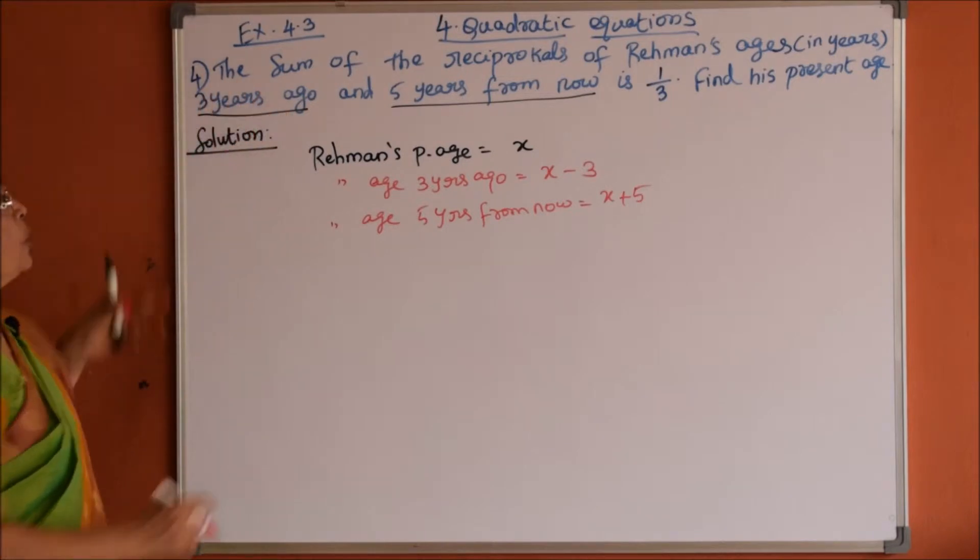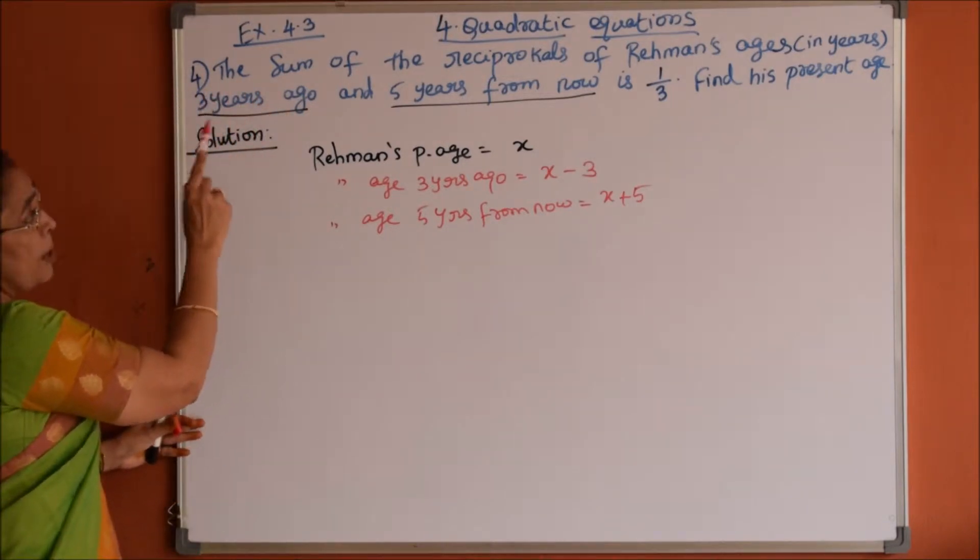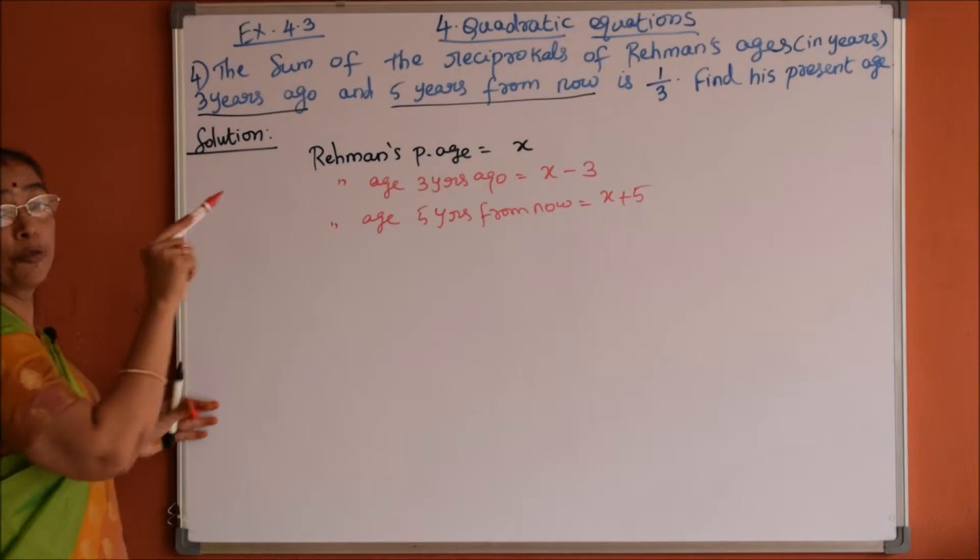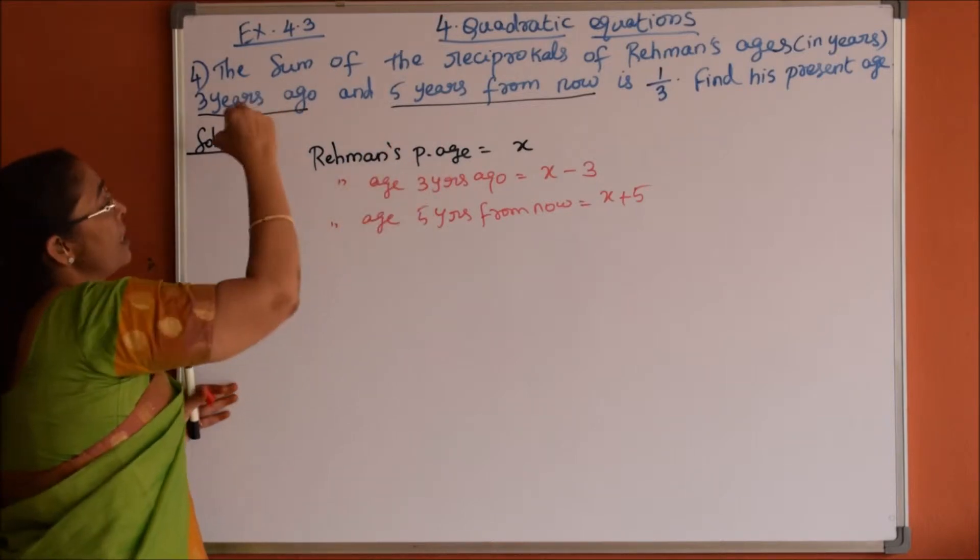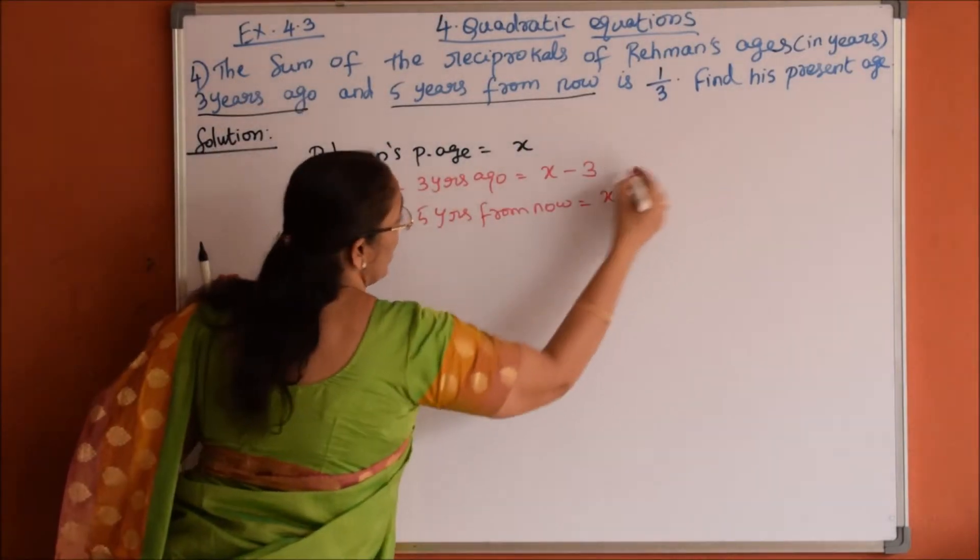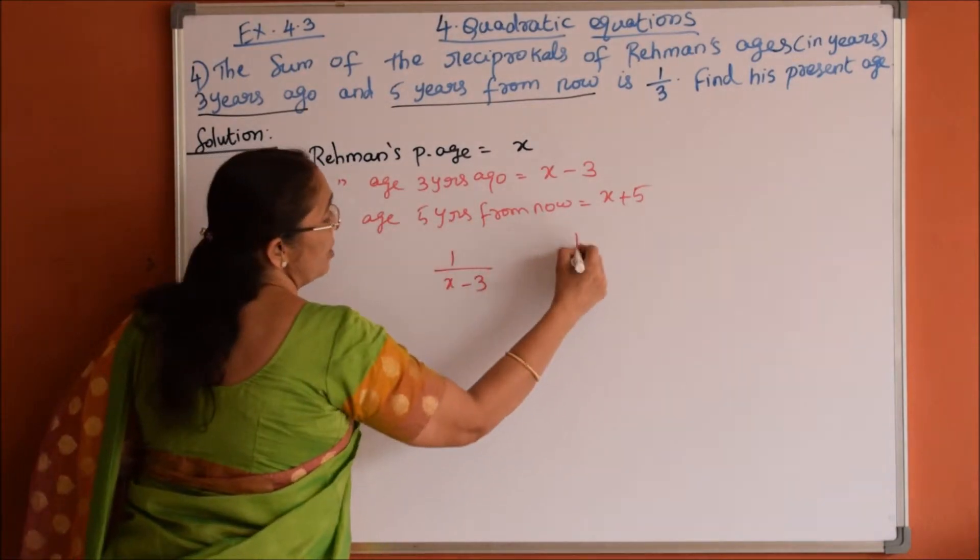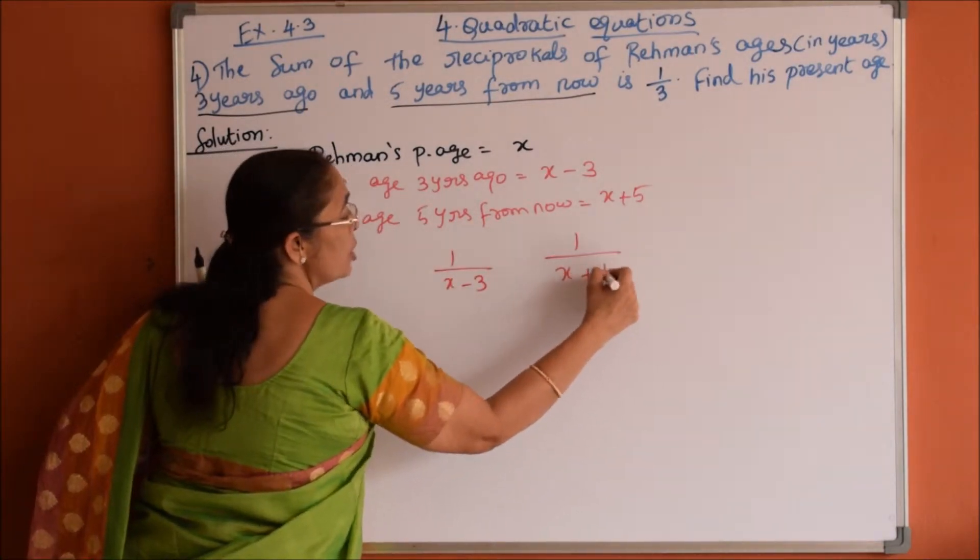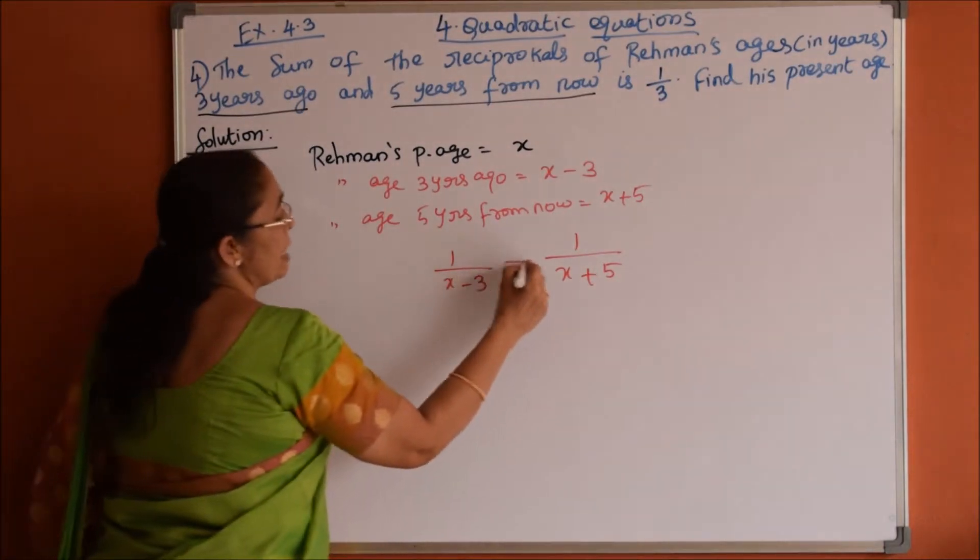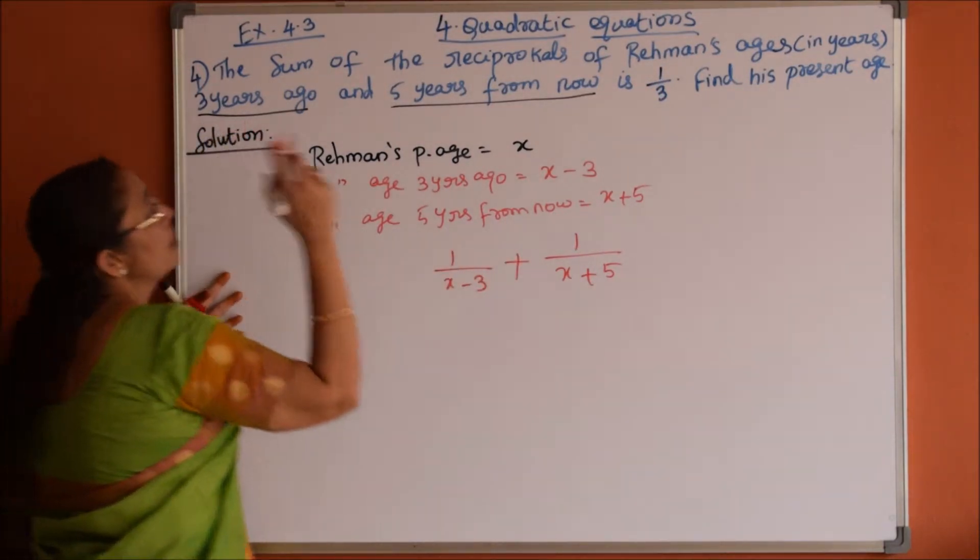Now shall we go to the first sentence. The sum of the reciprocals of Rahman's ages, 3 years ago, so reciprocal of this one is 1 by x minus 3. 5 years from now is 1 by x plus 5, so the reciprocals and their sum is 1 by 3.